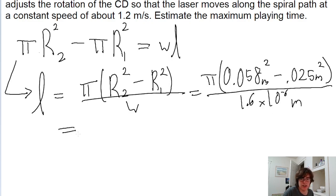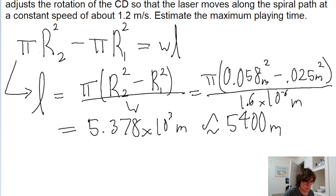So if we put that into a calculator, then we find a length of about 5.378 times 10 to the power of 3 meters, which can be rounded to about 5,400 meters. So this is our answer for part a.